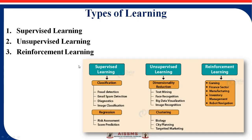We already discussed that there are three types of machine learning: supervised, unsupervised, and reinforcement learning. We already covered supervised and unsupervised in the last session, so let's see how exactly reinforcement learning works.